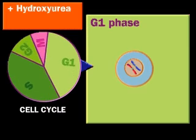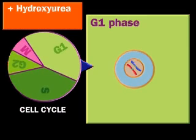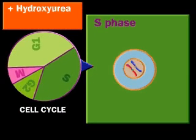Hydroxyurea blocks the synthesis of DNA building blocks. Thus, it inhibits DNA replication and nuclear division.